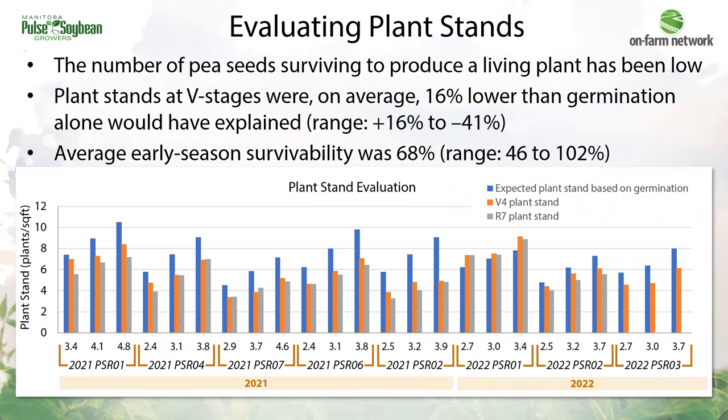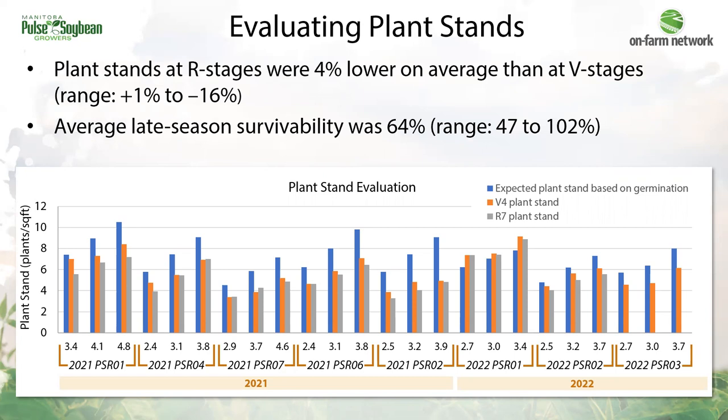Overall, what we've seen from the last two years of these trials is that the number of pea seeds that survive to establish a living plant has been low on average. Plant stands during vegetative stages were on average 16% lower than expected from germination rates alone — on average, 68% of seeds put in the ground survived to establish pea plants during vegetative growth stages, and it was as low as 46%. When we revisited those spots before harvest, plant stands at maturity were 4% lower on average than at earlier vegetative stages, meaning on average 64% of the seed put in the ground in the spring survived all the way to harvest.